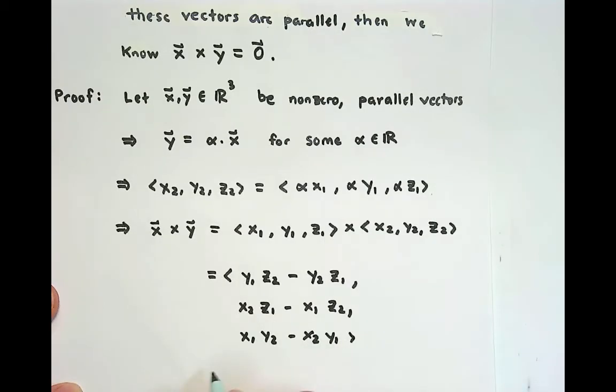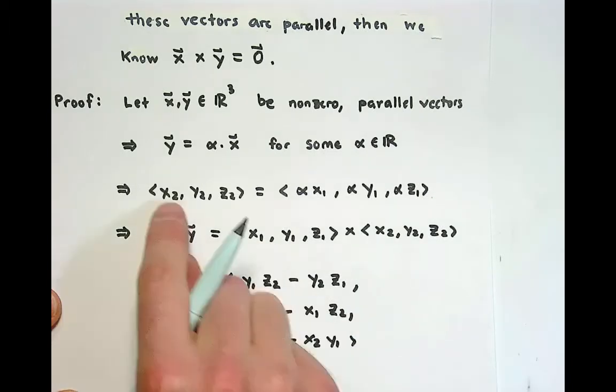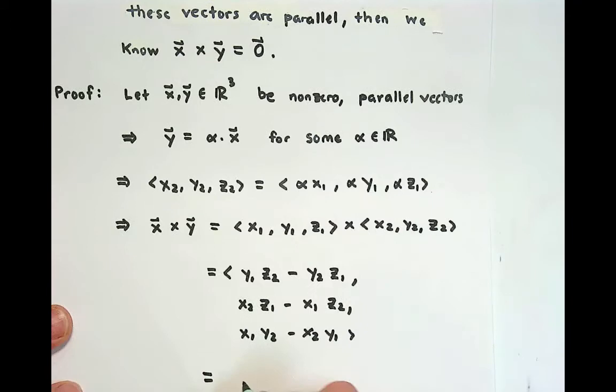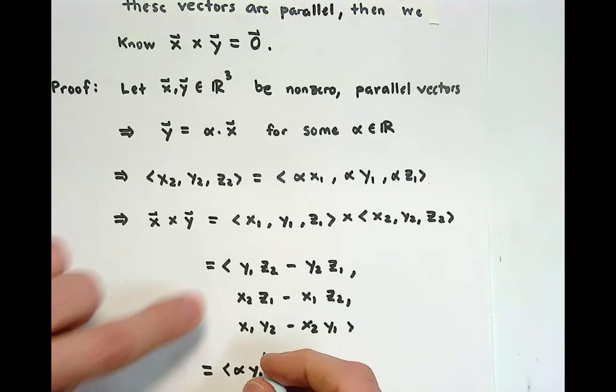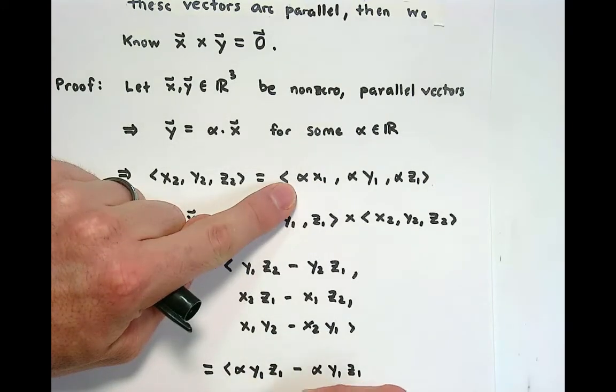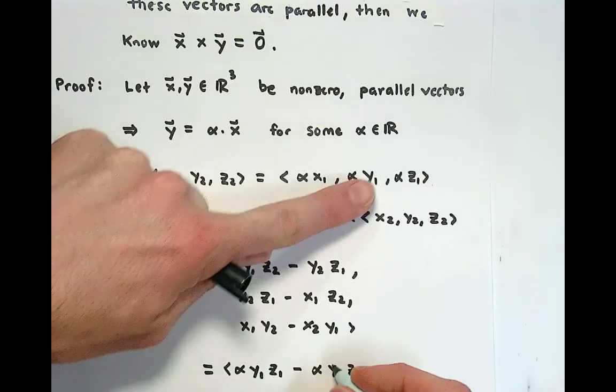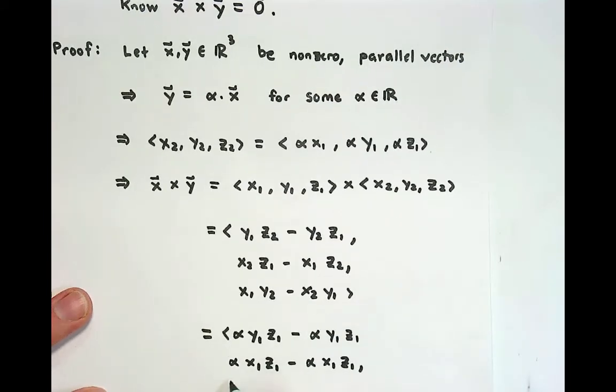What's interesting about this is that each of the x₂, y₂, z₂ is a scalar multiple of the x₁. So we can replace this entire thing as alpha y₁z₁, because z₂ was given by this thing, minus alpha y₁z₁. And there's the zero. x₂ was alpha x₁. This becomes alpha x₁z₁. z₂ was alpha z₁. So this becomes alpha x₁z₁. And there is our zero again.